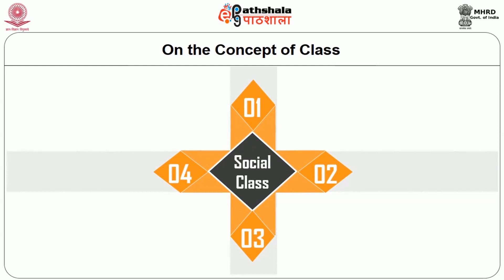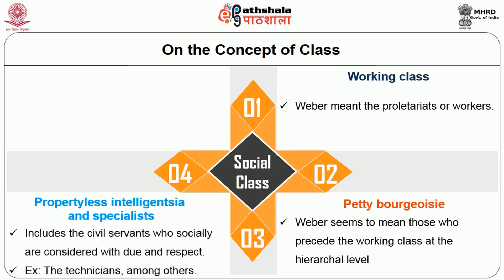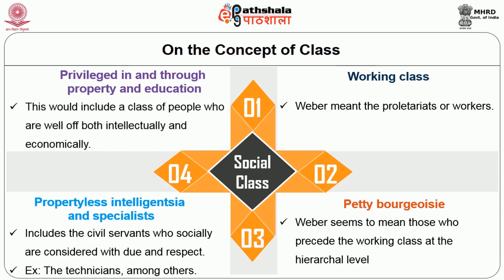Social class is the sum of all the mentioned class situations. Due to this reason, Weber gives us four major social classes: namely, the working class — by which Weber probably meant the proletariats or workers; the second is what he calls the petty bourgeoisie, meaning those who precede the working class at the hierarchy level; the third is what he calls the propertyless intelligentsia and specialists, which includes civil servants, technicians, bureaucrats and others who are socially regarded with due respect; and the fourth is the classes privileged in and through property and education — those who are well off both intellectually and economically.